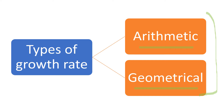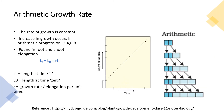In arithmetic growth rate, the rate of growth is constant. As shown in the diagram, the growth increment remains constant across all stages. The increase in growth occurs in arithmetic progression — for example, 2, 4, 6, 8 — which is why it is called arithmetic growth rate, following the 2, 4, 6, 8 pattern.